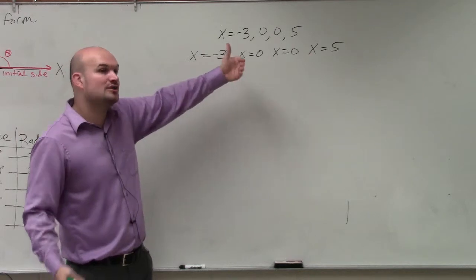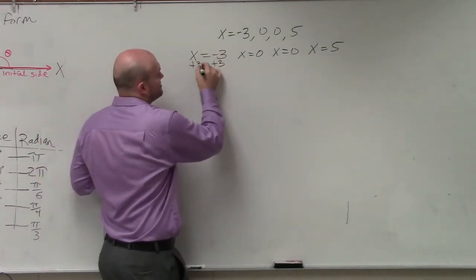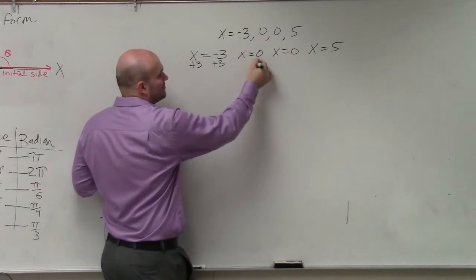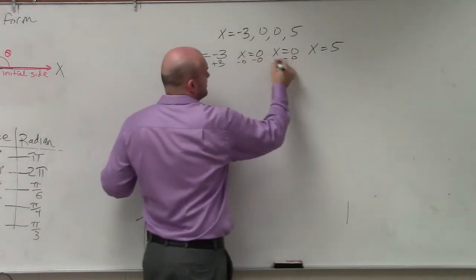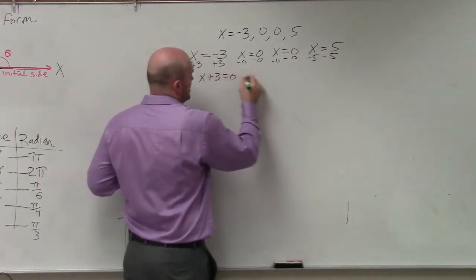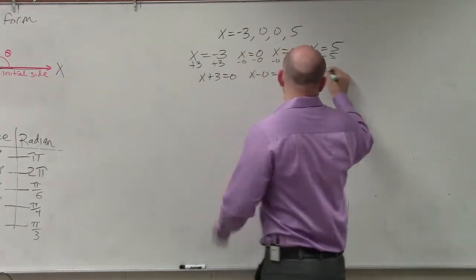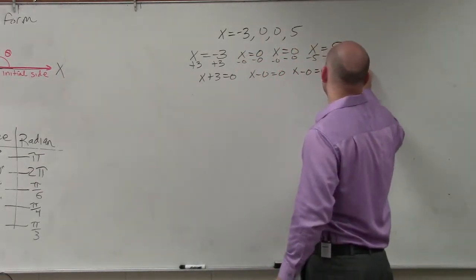Then you set them all on the same side so they equal 0. So you'd add 3 to both sides. You can't really subtract a 0, but if you'd like to, that's okay. And then subtract 5. So therefore, I have x plus 3 equals 0, x minus 0 equals 0, x minus 0 equals 0, and x minus 5 equals 0.